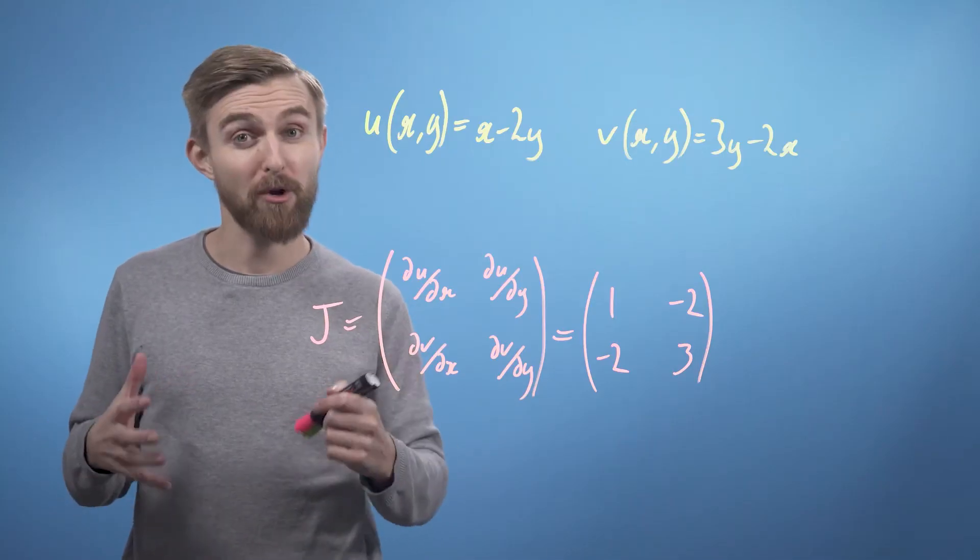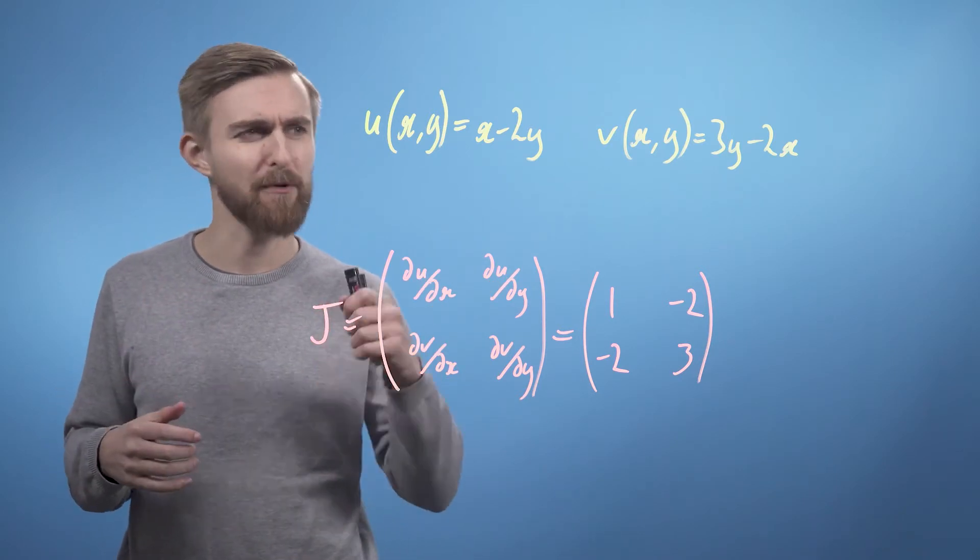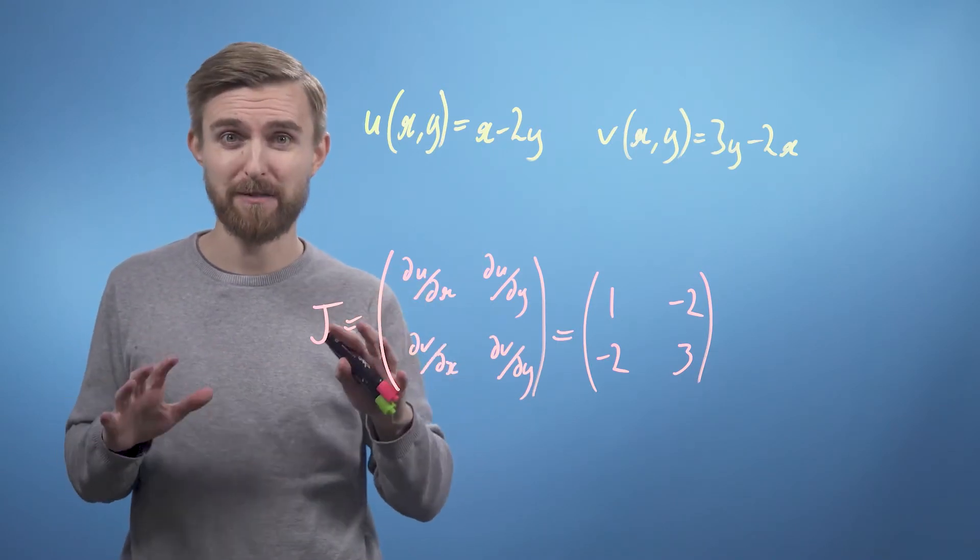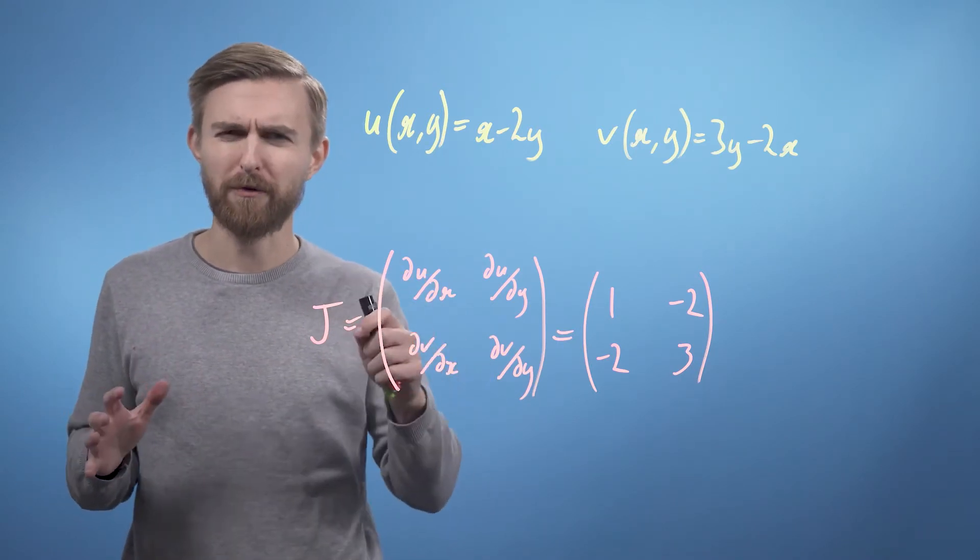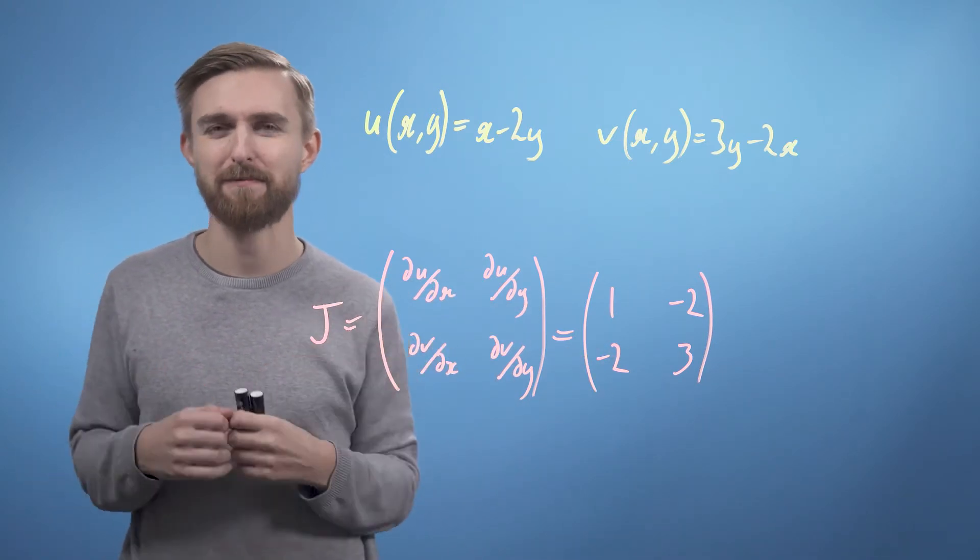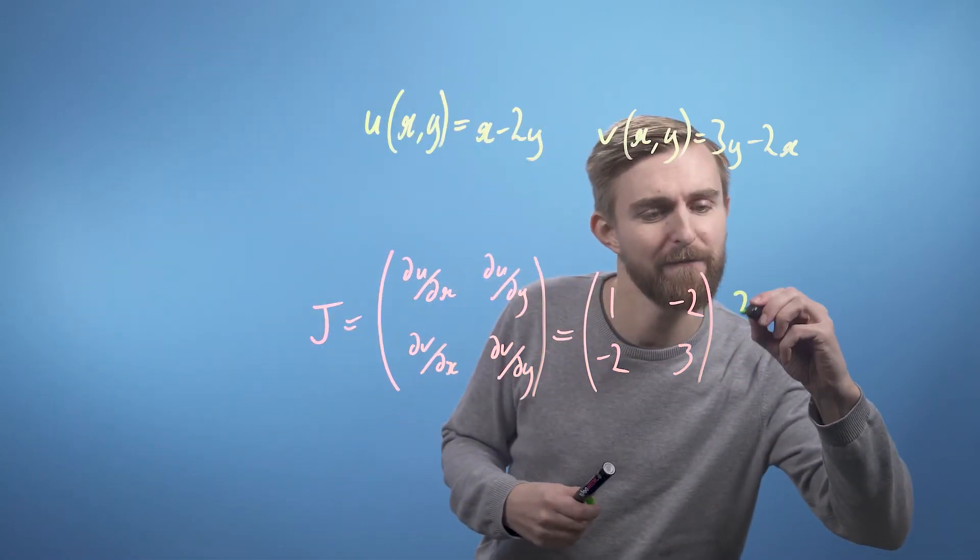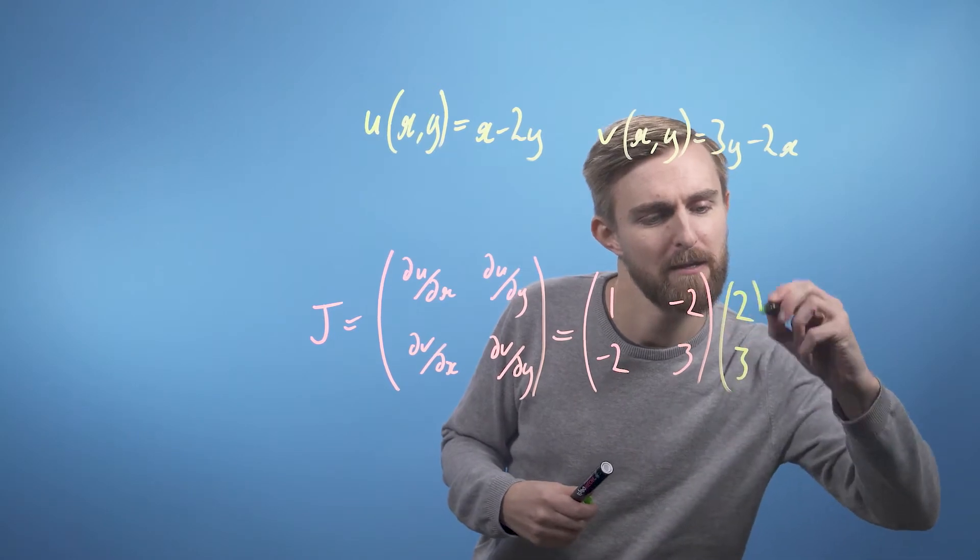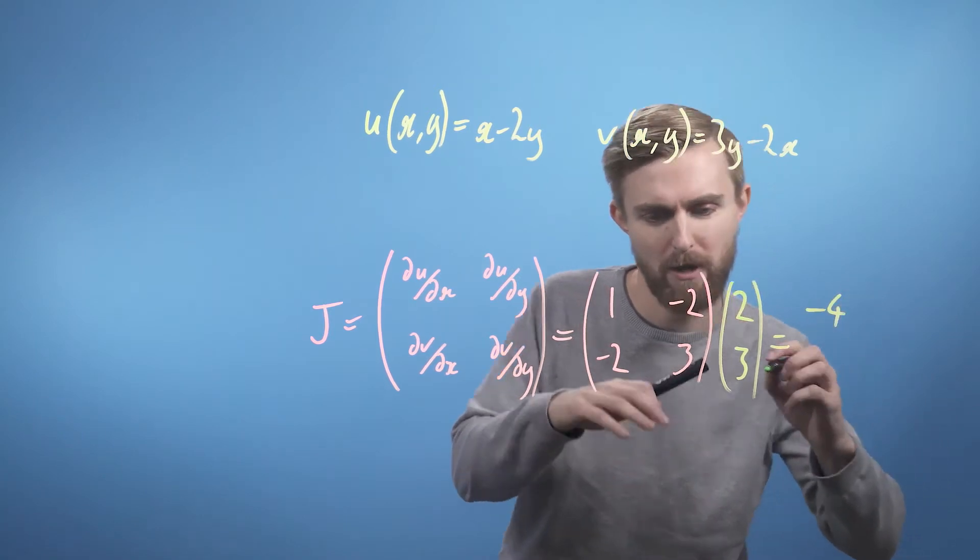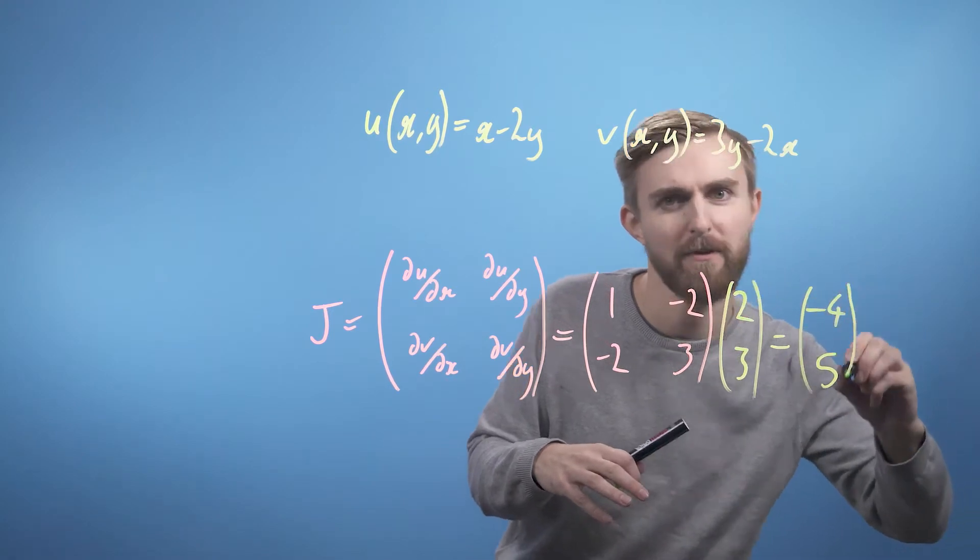Our Jacobian matrix no longer even contains any variables which is what we should expect when we consider that clearly both u and v are linear functions of x and y so the gradient must be constant everywhere. Also this matrix is just the linear transformation from x,y space to u,v space. So if we were to apply the x,y vector (2,3) we'd get 2 minus 6 that's minus 4 and minus 4 plus 9 that's 5.